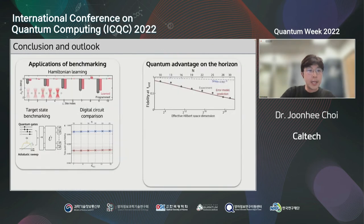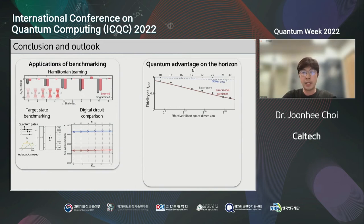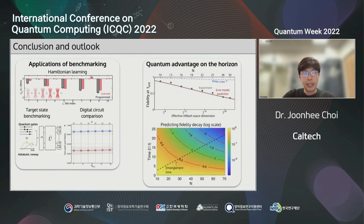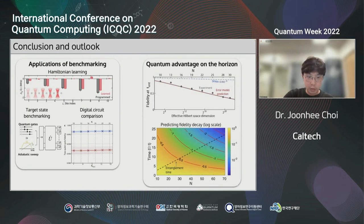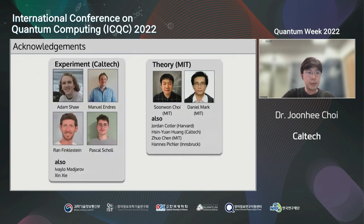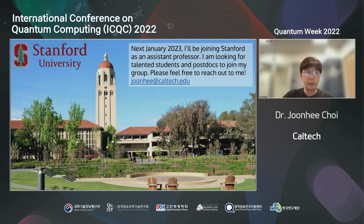To summarize, today I have discussed how to estimate the fidelity of large-scale quantum devices based on the universal randomness we find in quantum many-body dynamics. In particular, our Rydberg system is expected to maintain high fidelity even at larger systems. We are currently working on improving fidelity in the very large system regime with the ultimate goal of achieving effective quantum advantage in an analog quantum simulator. I'd like to thank all of my collaborators involved in these projects. And very briefly, I'd like to mention that I'll be starting my own research group at Stanford next year, so please feel free to reach out to me if you have any questions. Thank you very much for your attention.